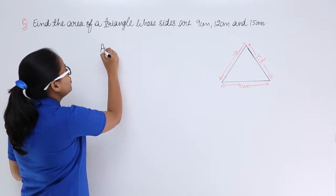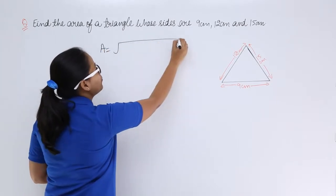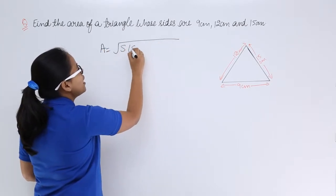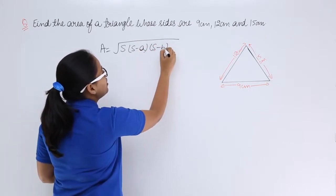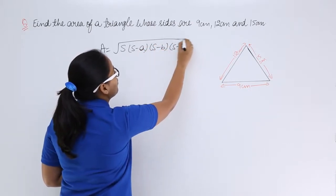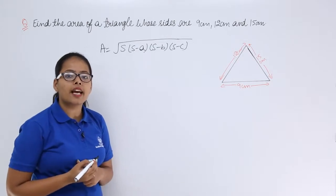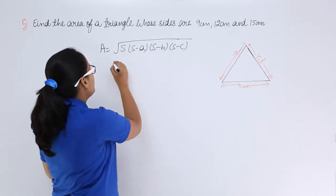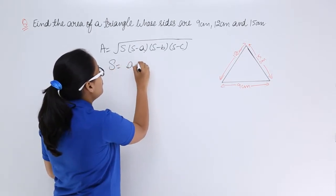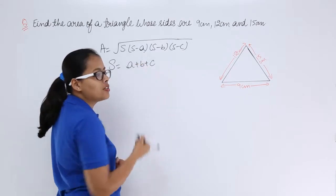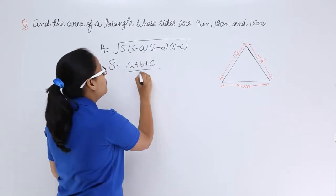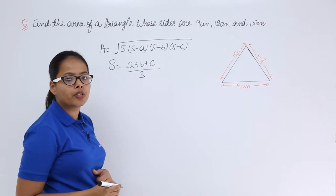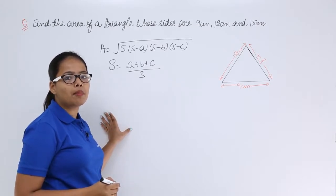Heron's formula is area equals under root s times s minus a times s minus b times s minus c. What is s here? S is semi-perimeter and the formula for semi-perimeter will be summation of all these three lengths divided by 3. So this is going to give you semi-perimeter.